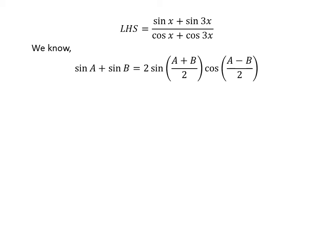We know the famous trigonometry identity: sine of A plus sine of B is equal to 2 times sine of half of (A plus B) times cosine of half of (A minus B).